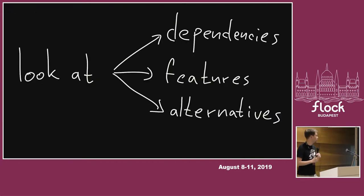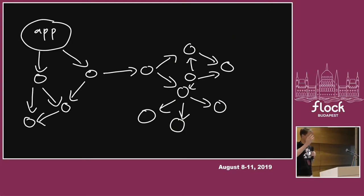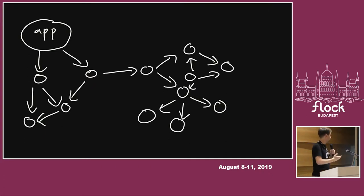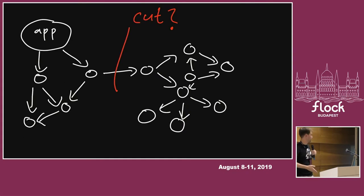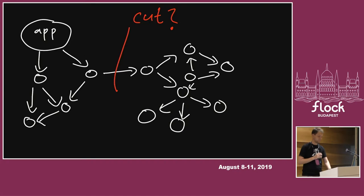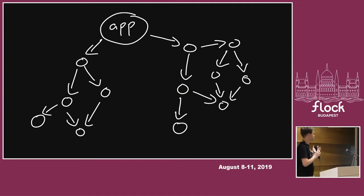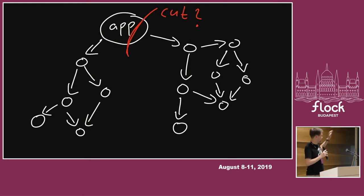We can look at multiple things: dependencies, features, or alternatives. If I have an application with a lot of dependencies, it can happen that something was pulled in by mistake or something was forgotten and just dragged in too many things. I can just cut it in half and maybe it'll continue working — that's the easiest thing we can do. Or for my use case I don't need all the features of the application, so I can cut a piece of the application out and it might minimize things.